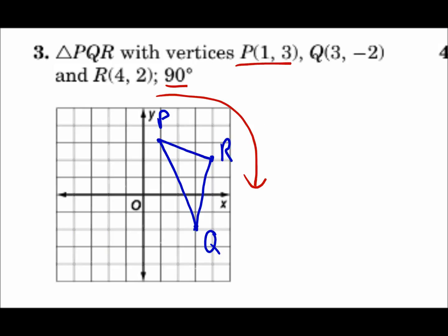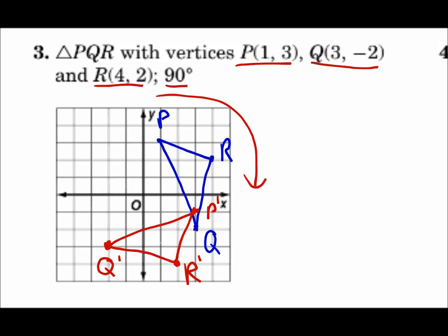If you turn your head to the right, you can see what's happening. From the origin, go one to the right and three up, and point P prime will go right there. For point Q at (3, -2), turn your head to the right 90 degrees — from the origin go (3, -2) and there's Q prime. Point R is at (4, 2) — from the origin go (4, 2) and there's R prime. Now connect the dots, and my rotation is complete.